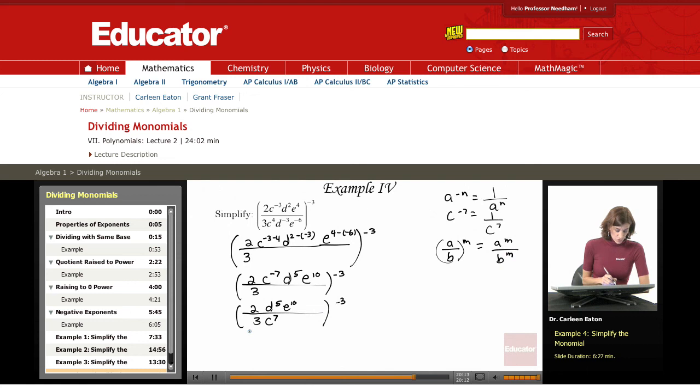That's going to give me two D to the fifth, E to the tenth, negative three, three C to the seventh, also to the negative three.